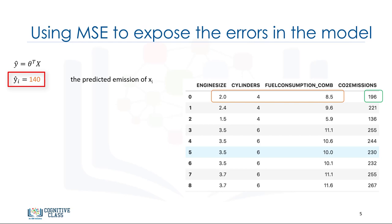Let's say, for example, it returns 140 as the predicted value for the specific row. What is the actual value? y equals 196. How different is the predicted value from the actual value of 196? Well, we can calculate it quite simply as 196 subtract 140, which of course equals 56.